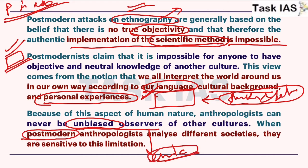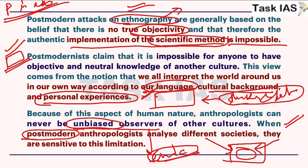According to post-modernist thinkers, if any researcher does case studies or fieldwork, they should be sensitive to this - meaning they should be aware of whether information reflects reality or their own thinking. For example, if a structuralist goes into the field with a post-modernist awareness, they will analyze whether a structural component is actually present in that society or whether it is their own bias and interest in structural models that causes them to observe structure in that particular society.